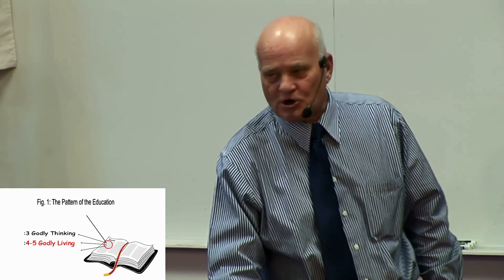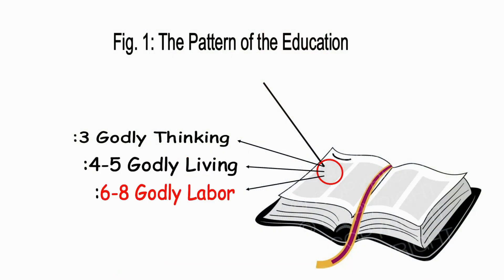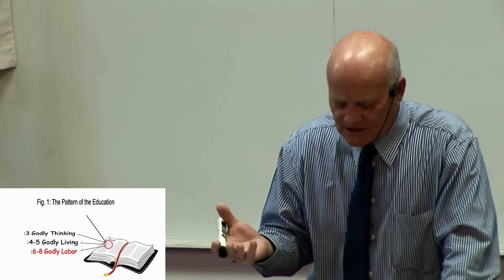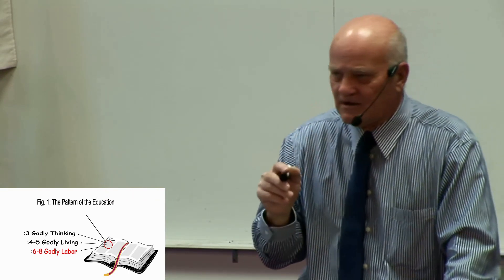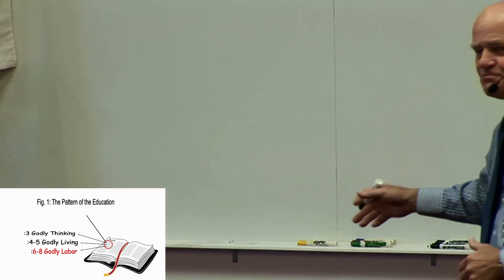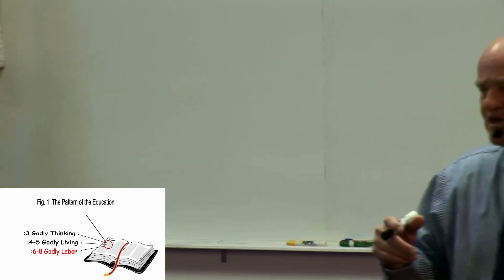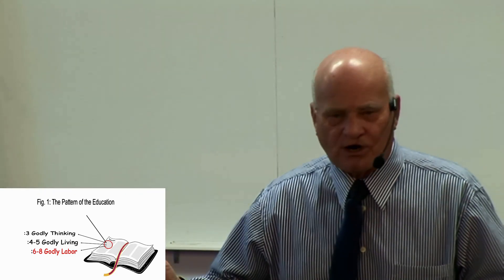The third component of the form of doctrine is the godly labor, and that is verses 6 through 8. At first glance, it may appear that the godly living and the godly labor are the same thing because they both have to do with our conduct. But there is a difference between them. The godly living aspect just has to do with putting that new thinking to work in all kinds of ways in our life.